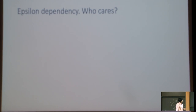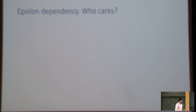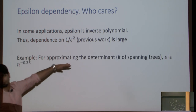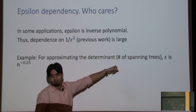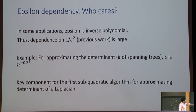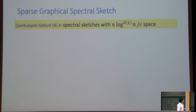We show that every graph has a graphical epsilon spectral sketch with n polylog n over epsilon edges. This is proved via short cycle decomposition. We care about the epsilon dependence because for estimating the determinant of a Laplacian — equivalently, the number of spanning trees — you need epsilon as small as n^{-1/4}. Our result is a key component in the first subquadratic algorithm for estimating the determinant up to 1 ± epsilon.